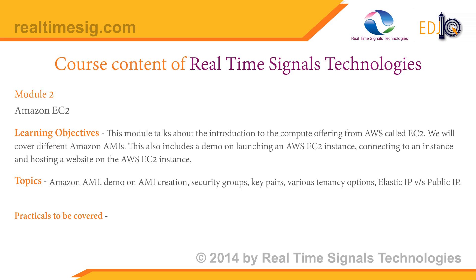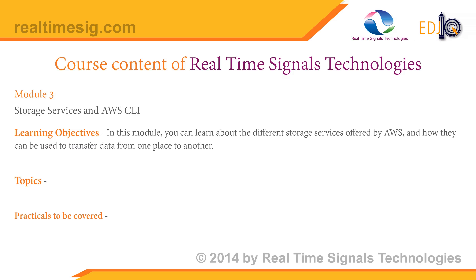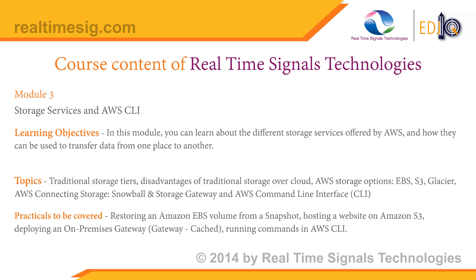Module 2 topics include Amazon AMI, demo on AMI creation, security groups, key pairs, various tenancy options, elastic IP versus public IP. Practicals include launching a free tier Linux instance and a Windows instance. Module 3 covers Storage Services and AWS CLI — different storage services offered by AWS and how to transfer data from one place to another. Topics include traditional storage tiers, disadvantages of traditional storage over cloud, AWS storage options including EBS, S3, Glacier, AWS Connecting Storage, Snowball, Storage Gateway, and AWS Command Line Interface. Practicals include restoring an Amazon EBS volume from a snapshot, hosting a website on Amazon S3, deploying an on-premises gateway, and running commands in AWS CLI.